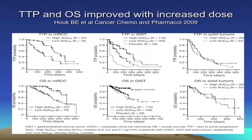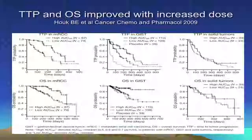One study showed that time to progression as well as overall survival improved with increasing doses. This was a sunitinib study conducted in both kidney cancer and GI stromal tumors, basically showing that the higher the dose, the better the efficacy — to a certain extent.